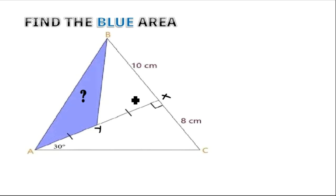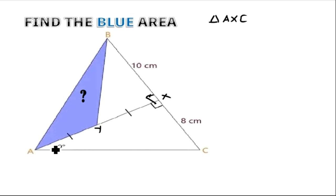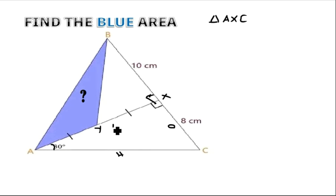Remember, if this angle is 90 degrees, then this other angle is also 90 degrees. Let us start with triangle AXC. In triangle AXC we have an angle of 30 degrees at A. That means side CX is the opposite side, AC is the hypotenuse (the longer side), and AX is the adjacent side. We will use trigonometric ratios.